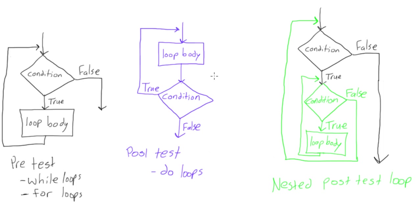Now in the blue here we have a post-test loop. This is for do loops. This is where we need maybe some input validation where we need to run the body of the loop at least once before we even test it.